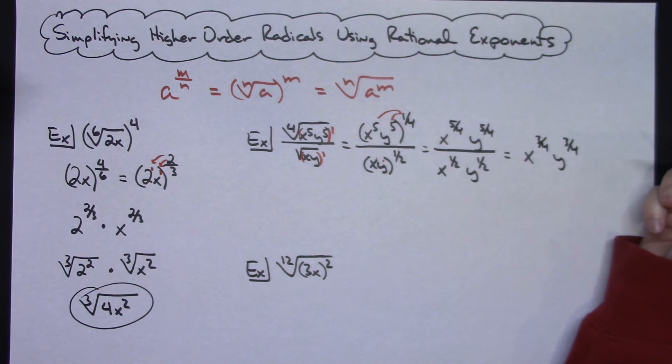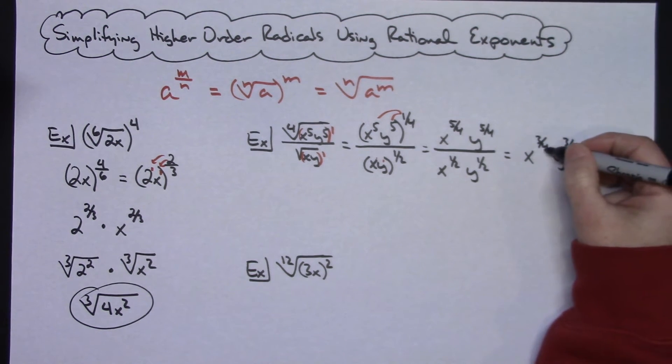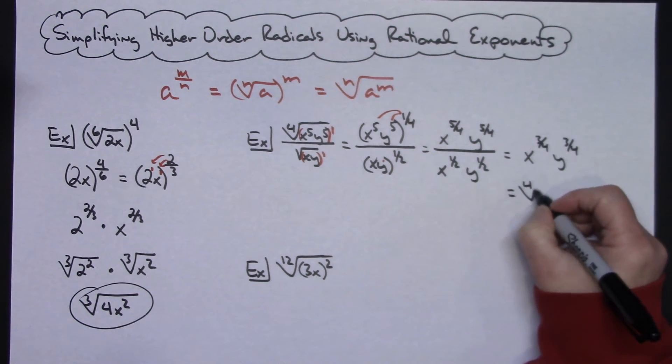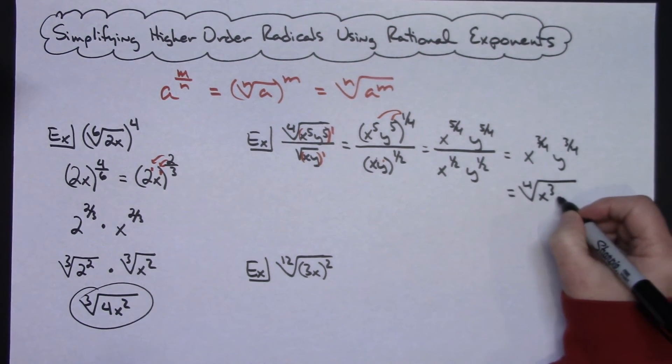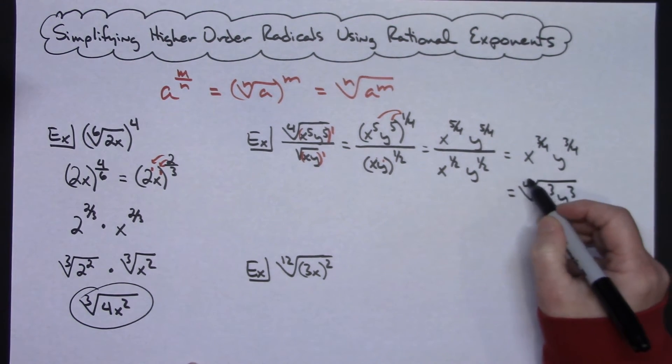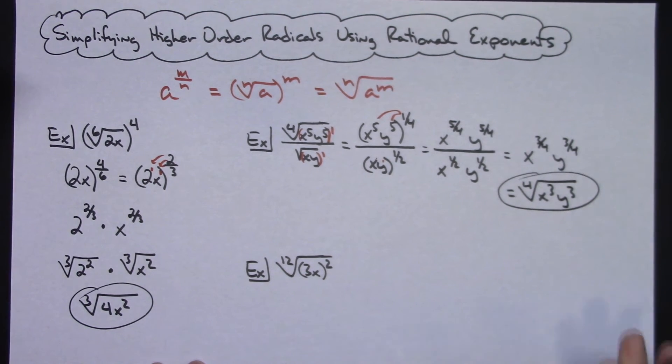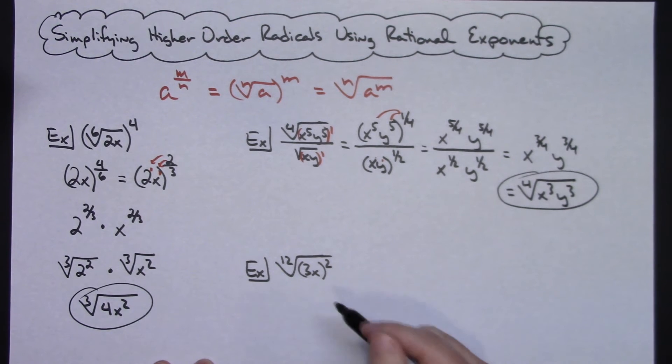They both have a denominator 4 there, so it's going to be the fourth root of x to the third, y to the third. So fourth root, x to the third, y to the third. Putting that final answer back in radical form since technically that is the directions. We're simplifying the higher order radicals.